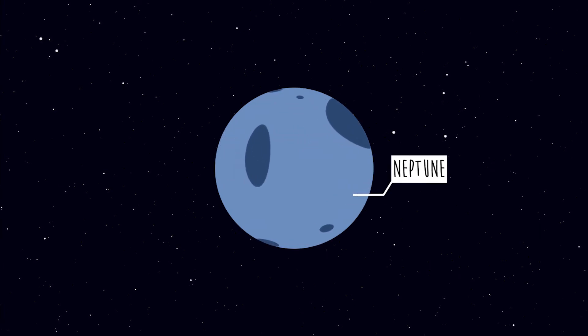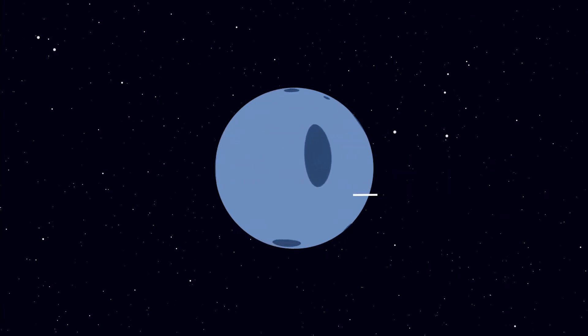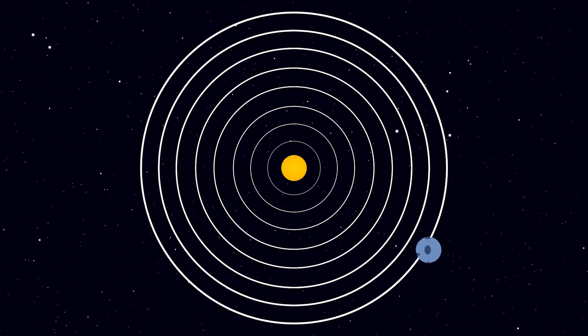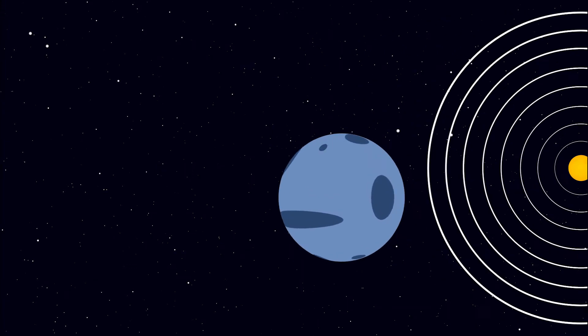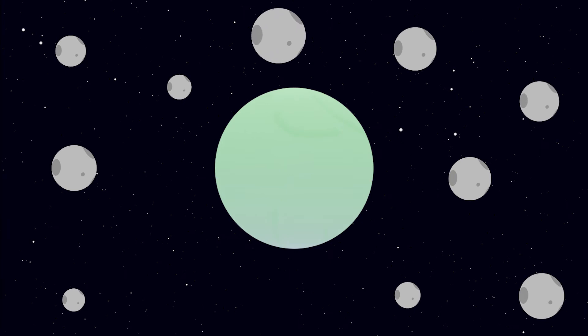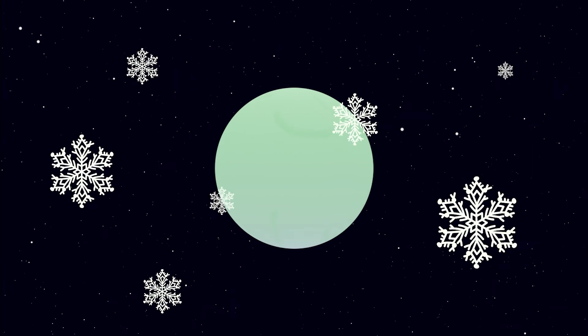Neptune is the eighth planet from the Sun, making it the most distant in the solar system. It has 11 moons, one of them being Triton, which is also commonly known as the frozen world.